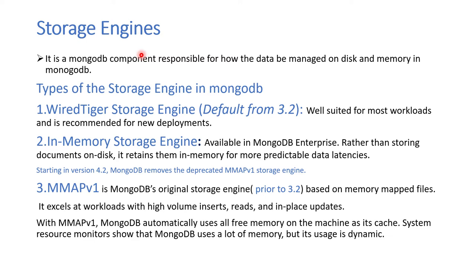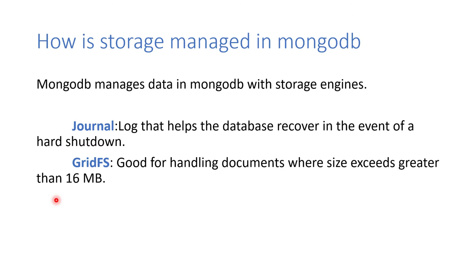To summarize, a storage engine is a database component used to manage disk and memory in MongoDB. There are three types: WiredTiger (default from v3.2), the In-Memory storage engine for Enterprise edition, and the deprecated MMAPv1 available in versions prior to 3.2.